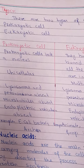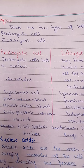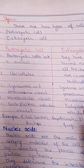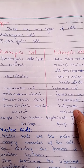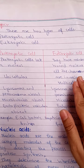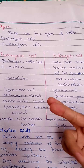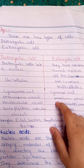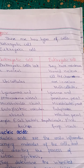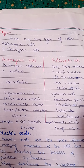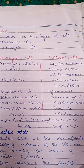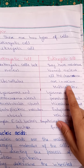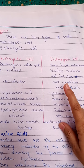Cells have two types: prokaryotic and eukaryotic. In prokaryotic cells, there is no nucleus — the cells lack a nucleus. Eukaryotic cells have a membrane-bounded nucleus, and all chromosomes are located within that nucleus.